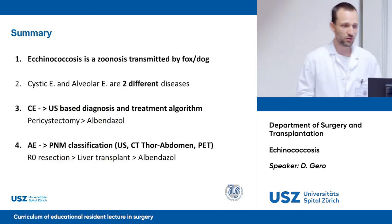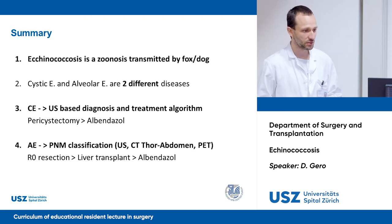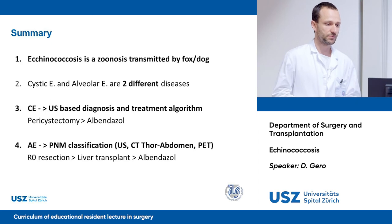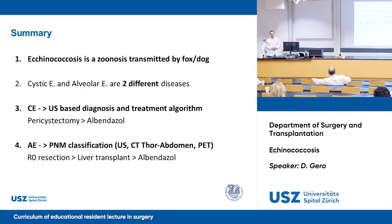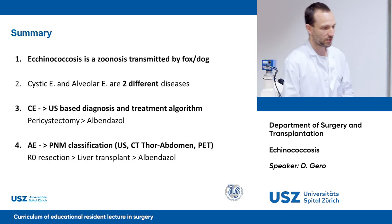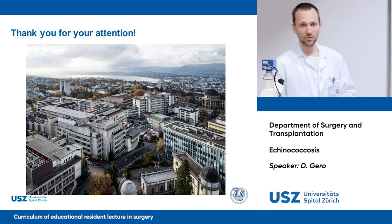To sum up: echinococcosis is a zoonosis transmitted by fox and dogs. Cystic and alveolar echinococcosis are two different diseases with different behavior. Cystic echinococcosis diagnosis is based on ultrasound, with pericystectomy plus albendazole as the favored treatment. For alveolar echinococcosis, classification uses the PNM system with ultrasound, CT, and sometimes PET scan, and the aim is R0 resection with or without liver transplantation plus albendazole therapy. Thank you for your attention — I look forward to questions.